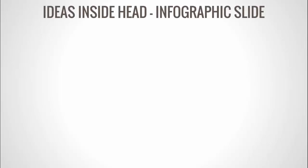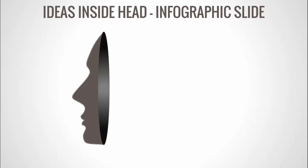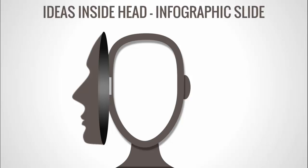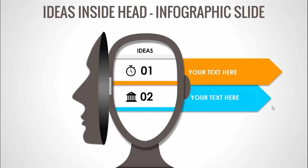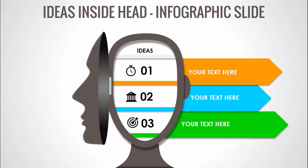In today's tutorial, I'm going to show you how to create an 'Ideas Inside Head' infographic slide in PowerPoint. When I click, the silhouette appears, then the head opens and ideas appear one by one — each with an icon, option number, and detailed text, in different color combinations. Depending on the requirement, you can increase or decrease the number of ideas. I've created two slides: one with animation and another without.